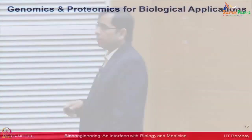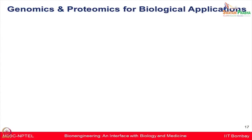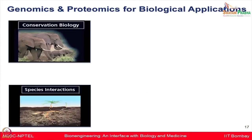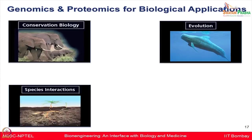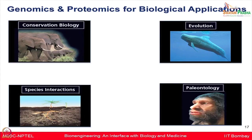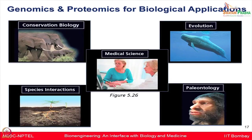These are some examples from the textbook where a revolution happened because of our advancement in understanding genome and proteome. These advances are apparent in every single field — whether conservation biology, evolutionary studies, species interactions, paleontology, or medical science. All of these fields have benefited heavily from knowing what can happen at the gene sequence level and at the protein level.